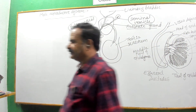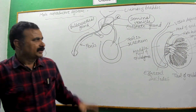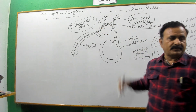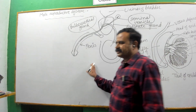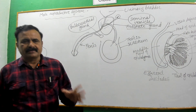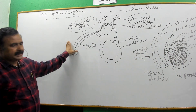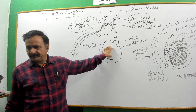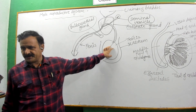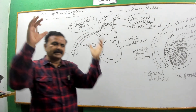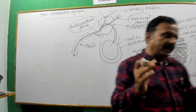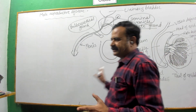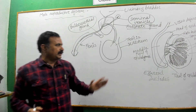Today we are going to learn about the male reproductive system. It is composed of two major parts: one is the penis, which is the ejaculatory part, and the main part is the testis. There are two testes which are present outside the body of the male, inside a sack-like structure called the scrotum.